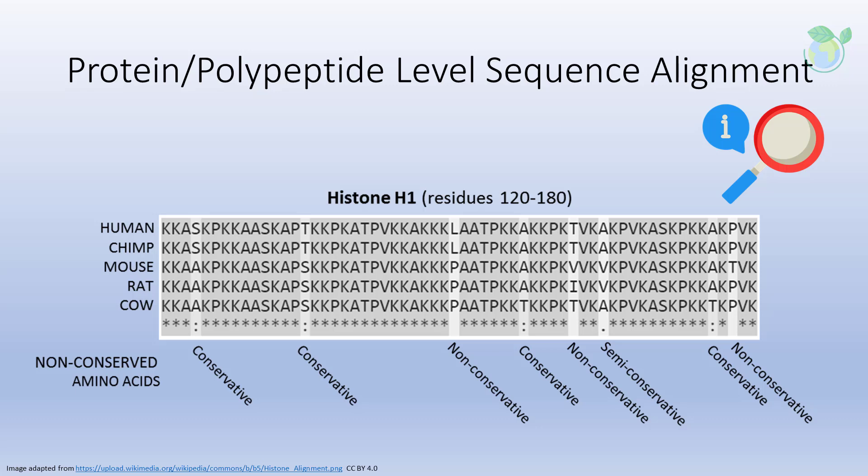For the example shown, sequence alignment of amino acids can be performed across multiple sequences, and we can determine conservation, non-conservation, or semi-conservation of the amino acid constituents. Proteins can have substitution matrices such as BLOSUM and PAM that incorporate probabilistic models, which is more complicated than nucleotide sequence analysis. One point to note is that the third position of codons is more mutable because this position can typically change without changing the amino acid that it encodes.